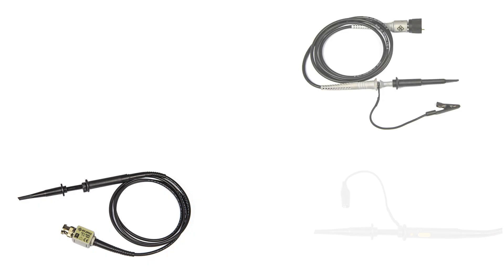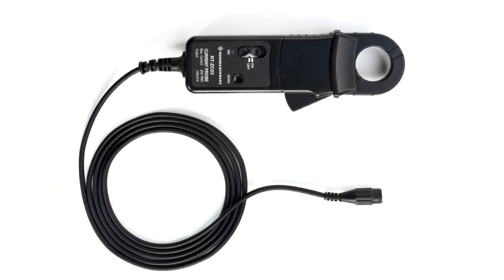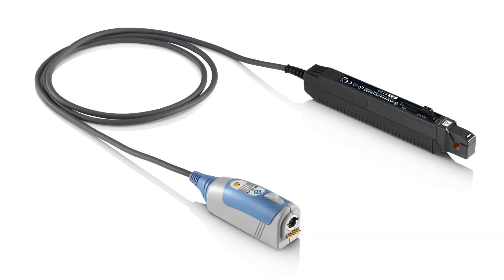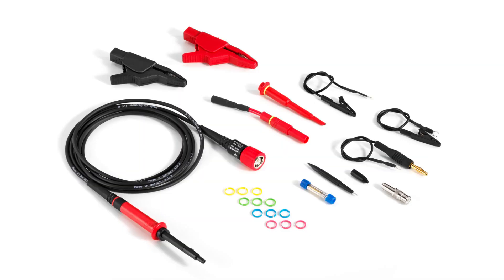There are many other different forms of oscilloscope probe. One useful type is the current probe, which operates by clipping the probe around the wire carrying the current. It's not always possible to gain access to every conductor, but where it is possible this probe can be very useful when current needs to be measured. Then there's the high voltage probe: when voltages get into the kilovolt region, special care needs to be taken and a voltage step-down is required before the voltage enters the scope. High voltage probes often have special insulated ends and may be times 50 or times 100.